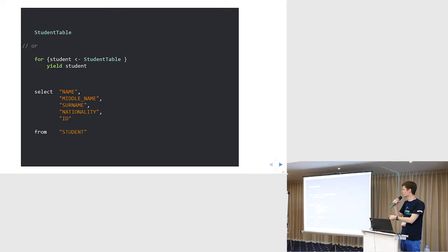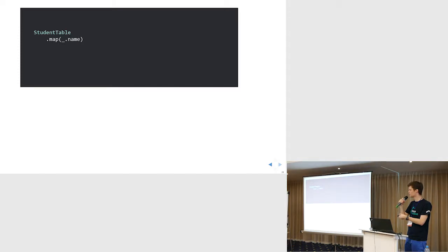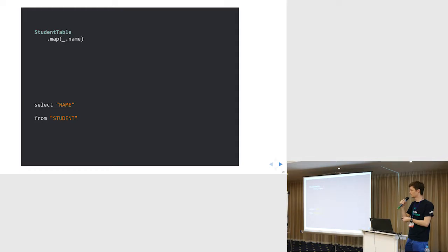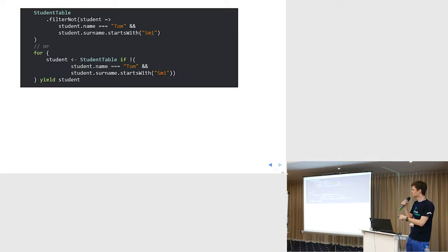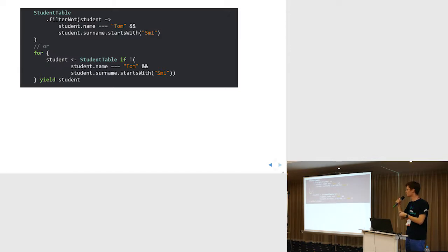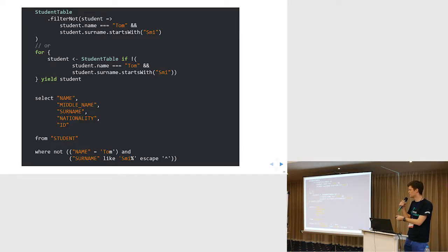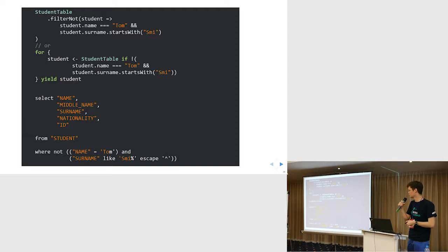Another example: student table mapping the name — so we only want this name field, and we see that it's a simple projection, taking only the name from the student. A more advanced example is doing a filter with NOT — it will produce on the database something like a WHERE NOT with our conditions: student name equals Tom or student surname starts with 'S'. We have both the applicative form and the monadic form, which are identical and translated to the same SQL query: SELECT all fields FROM student WHERE NOT with our conditions.